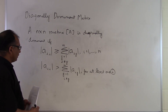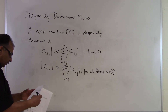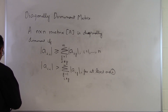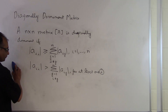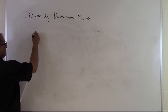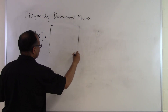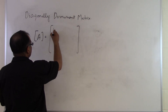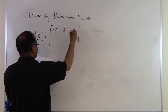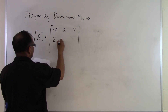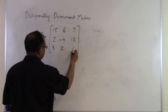Let's look at several examples to see whether a particular matrix is diagonally dominant or not. We have the matrix: row 1 is 15, 6, 7; row 2 is 2, -4, -2; row 3 is 3, 2, 6.